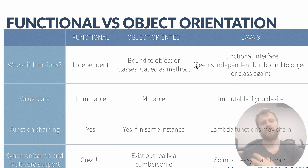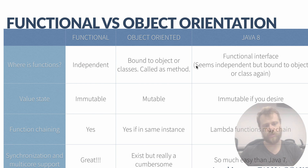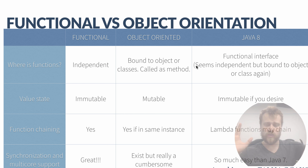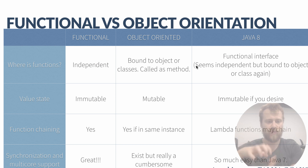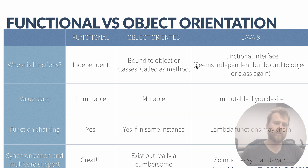The second item is value state. In pure functional programming, value state is immutable — you cannot change an attribute throughout the application; you can only copy a value, modify it, and return it. In object-oriented programming, objects are mutable — we can change the attributes so that all references addressing this object use the modified values. In Java 8, we have some constructs to protect objects from modifications.